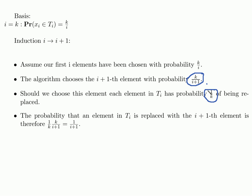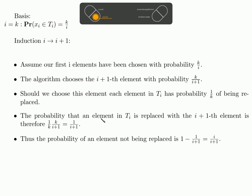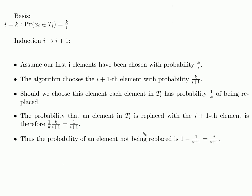So we first say: we choose this element with probability k over i plus 1, and then — this is a logical and, or a probabilistic and — with probability 1 over k. This multiplication gives us the probability 1 over i plus 1. This is the probability of one element in our sample being replaced with the new element x_{i+1} in the i plus 1 time step. Thus the probability of an element not being replaced is the complementary probability, which gives us i over i plus 1.